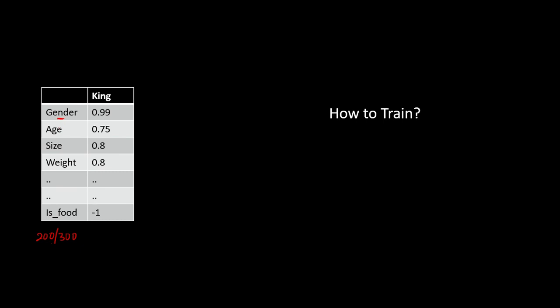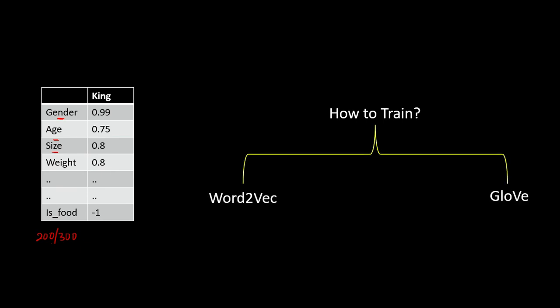This was just an example where I named the features like age, gender, size, etc. The features are not given any names but are created with the help of models. In those word embeddings, even though the features are not named, the computer can understand the contextual meaning behind the words and we can also find the relationship between words. There are techniques that can learn associations between words and automatically assign appropriate values to each feature. Two such techniques are Word2Vec and GloVe.